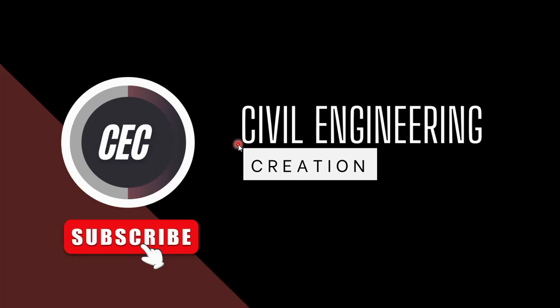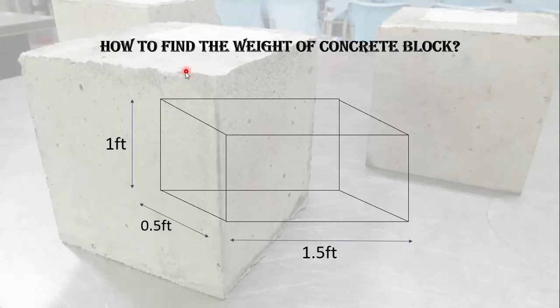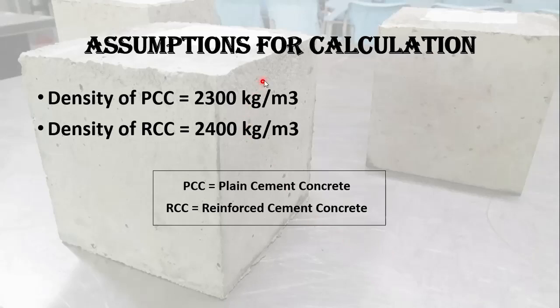Welcome to my YouTube channel, Civil Engineering Creation. Today's question is how to find the weight of a concrete block. Here you can see a block with dimensions: 1 foot height, 0.5 feet width, and 1.5 feet length.